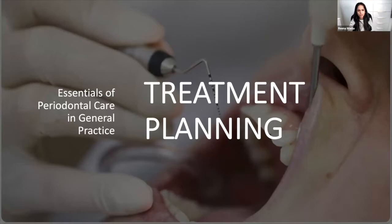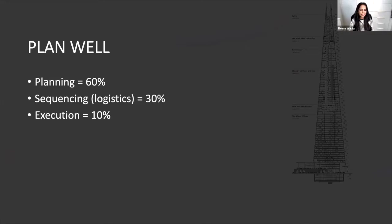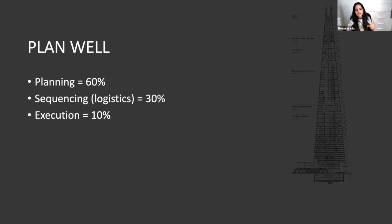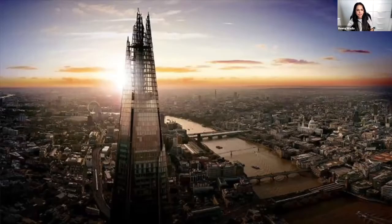Now the treatment planning section. Like the Shard building project — which succeeded because they spent 60% of the time planning and only 10% executing — with perio patients you must spend more time planning. Think about tooth-by-tooth prognosis: if a patient is going to lose two teeth, how will you replace them in the medium and long term? Do you need to phase the treatment? Should you focus on oral hygiene first before moving to active treatment?